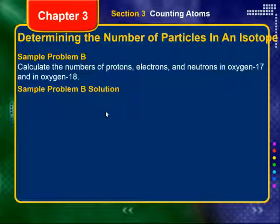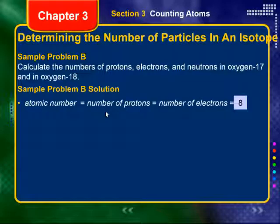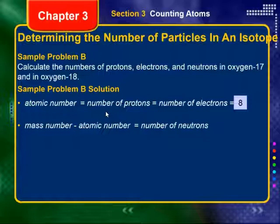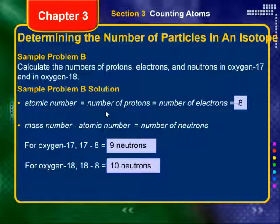Let's look at another sample: calculate the number of protons, electrons, and neutrons in oxygen-17 and oxygen-18. The atomic number for oxygen equals 8, which means 8 protons and 8 electrons. To find the number of neutrons, take the mass number and subtract the atomic number. For oxygen-17: 17 minus 8 gives 9 neutrons. For oxygen-18: 18 minus 8 gives 10 neutrons.